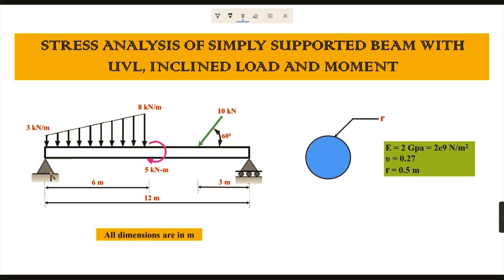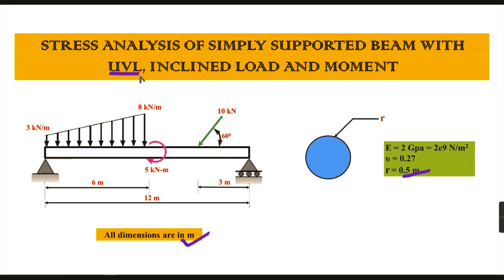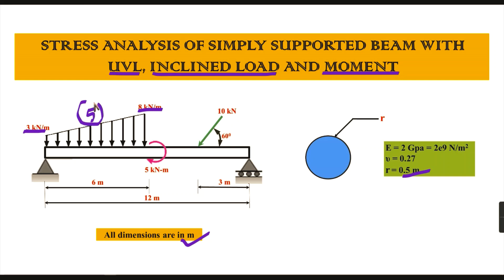A beam is placed over two supports — one is pinned and another is a roller support. The cross-section of this beam is a circular solid cross-section with a radius of 0.5 meters. Three different loads are acting on this beam: one is UVL, one is an inclined load, and another is a moment. The UVL starts at 3 kilo-Newton per meter and the highest load is 8 kilo-Newton per meter, giving a deviation of 5 kilo-Newton per meter.